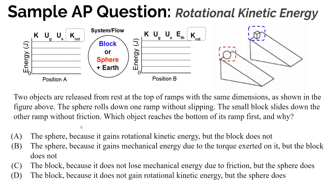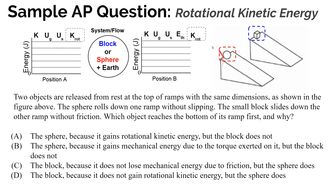Let's look at a sample AP question on rotational kinetic energy. Two objects are released from rest at the top of ramps with the same dimensions. A sphere rolls down one ramp without slipping, and a small block slides down the other ramp without friction. Which object reaches the bottom of its ramp first, and why?